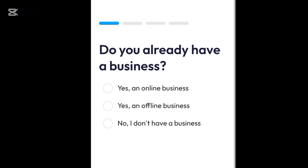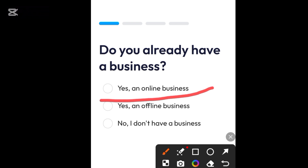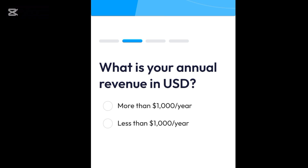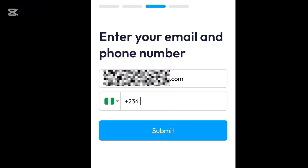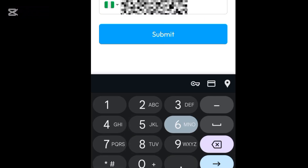Once it brings you to this interface, you have to scroll. It is asking: do you already have a business? Options are: yes, an online business; yes, an offline business; or no, I don't have a business. Here I'm going to choose 'yes, an online business.' Next it asks for your annual revenue in USD, then it requests your phone number — you put your phone number and click on submit.